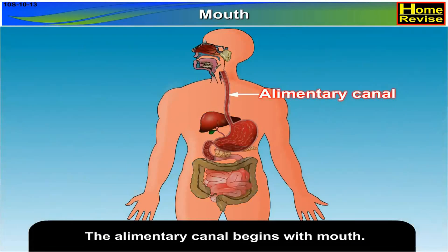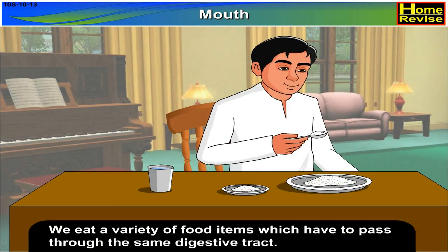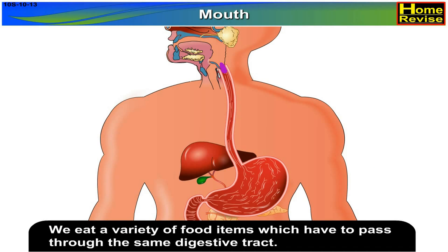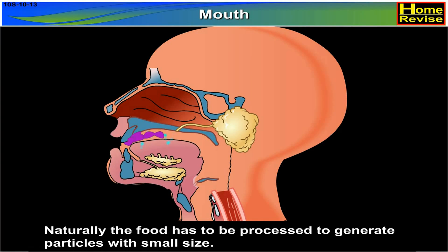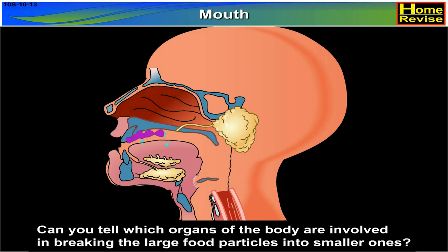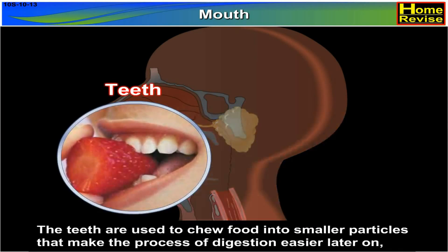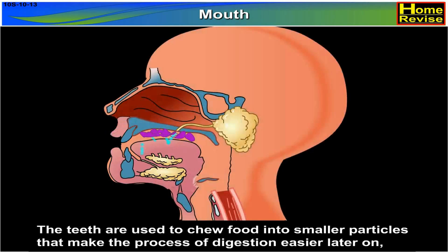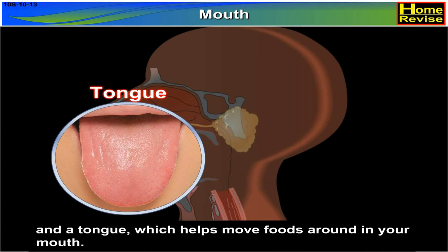The alimentary canal begins with the mouth. We eat a variety of food items which have to pass through the same digestive tract. The food has to be processed to generate particles with small size. The teeth are used to chew food into smaller particles, making the process of digestion easier, and the tongue helps move food around in the mouth.